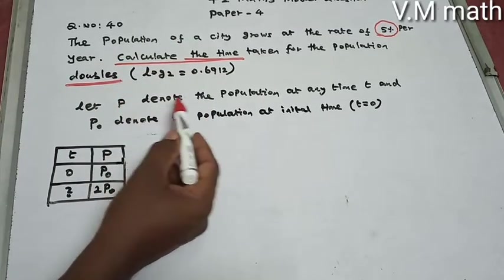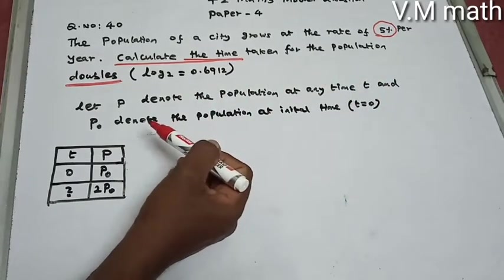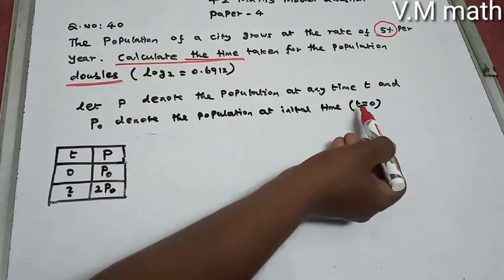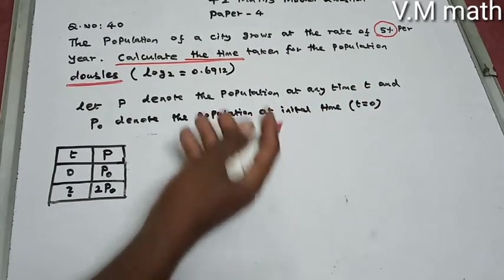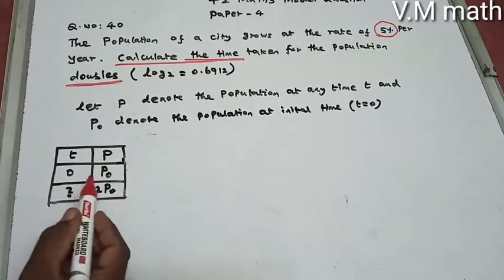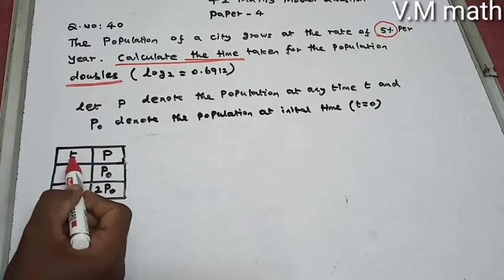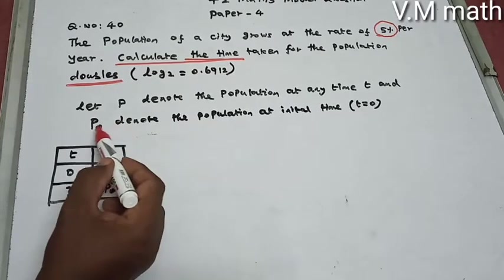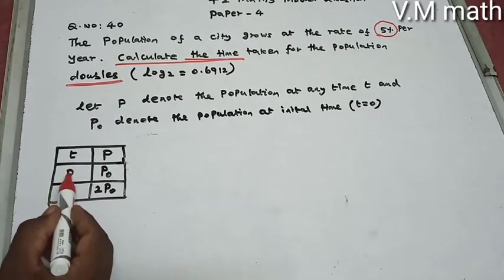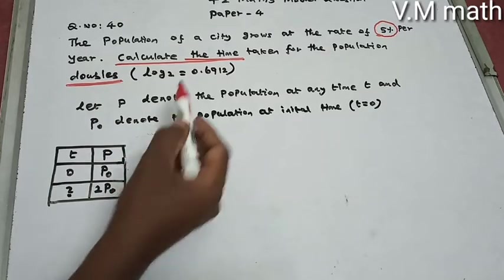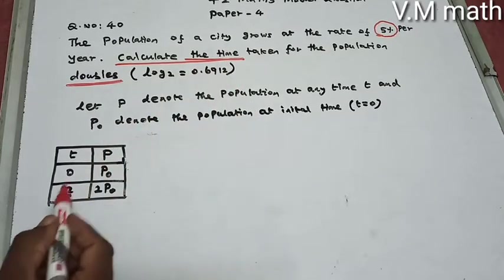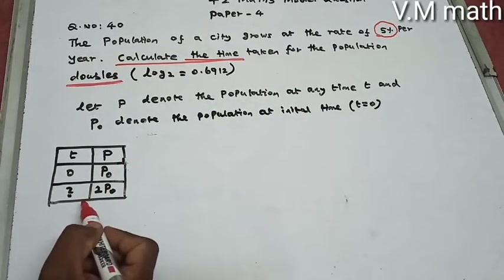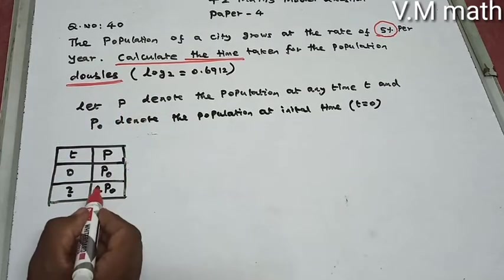Let capital P denote the population at any time T, and P0 denote the population at initial time, that is when T equals 0. In the table: at initial time T equals 0, population is P0. We need to calculate the time after which the population doubles to 2 times P0.